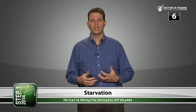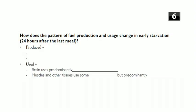Question six: how does the pattern of fuel production and utilization change in early starvation? We're now 24 hours after the last meal. What's produced is glucose, mainly from gluconeogenesis — there's not much glycogenolysis anymore because glycogen stores have been used up between 10 and 18 hours. There are also some fatty acids being produced from adipose tissue.